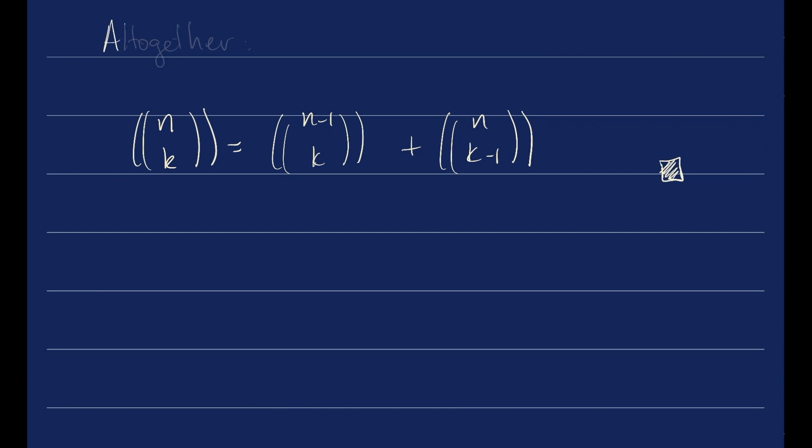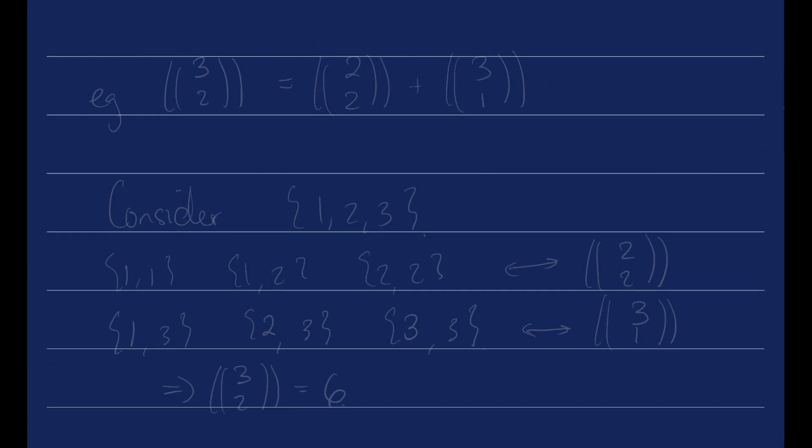This, of course, requires some examples. Let's try and find 3 multi-choose 2. According to our formula, it should be 2 multi-choose 2 plus 3 multi-choose 1.